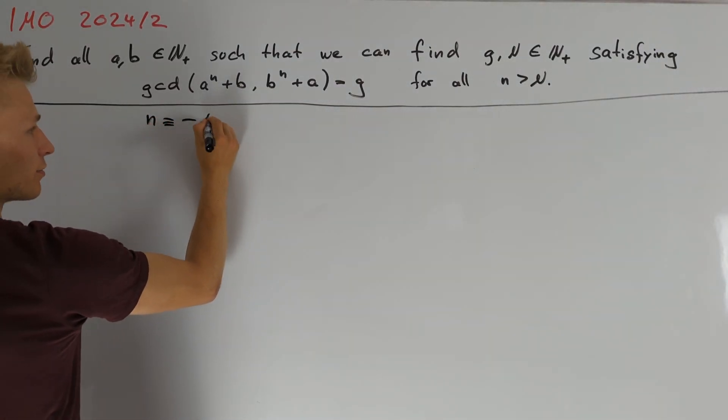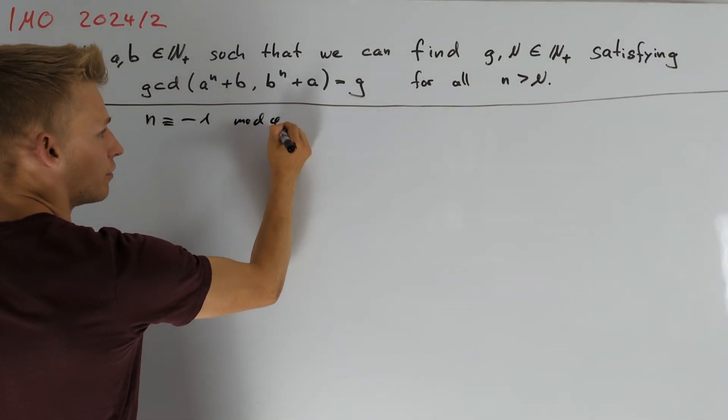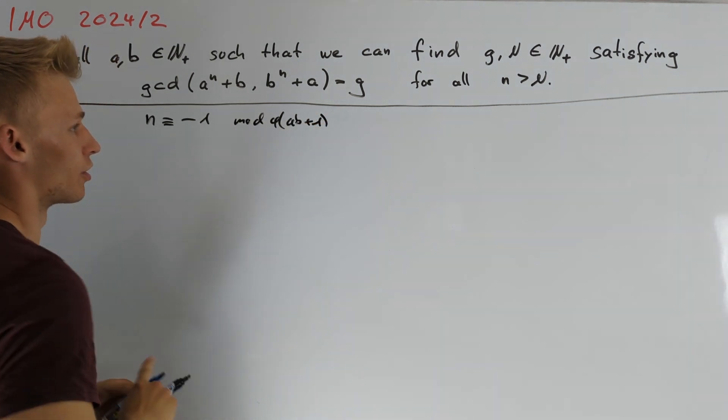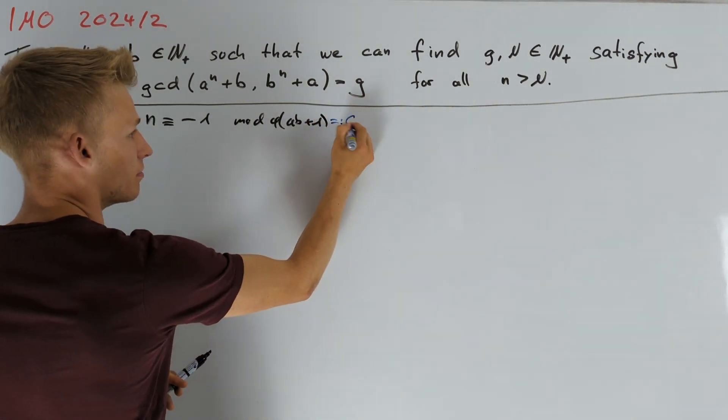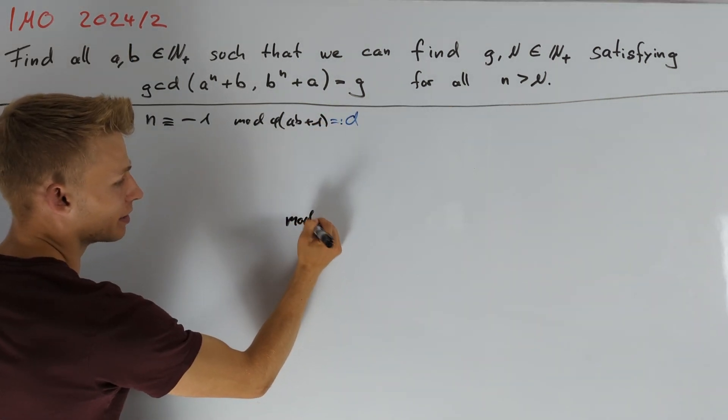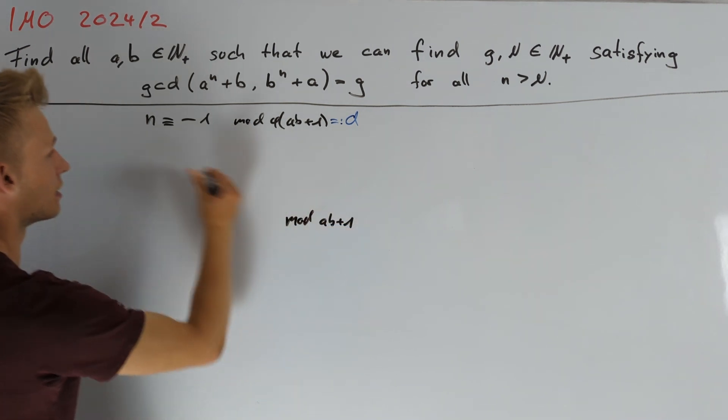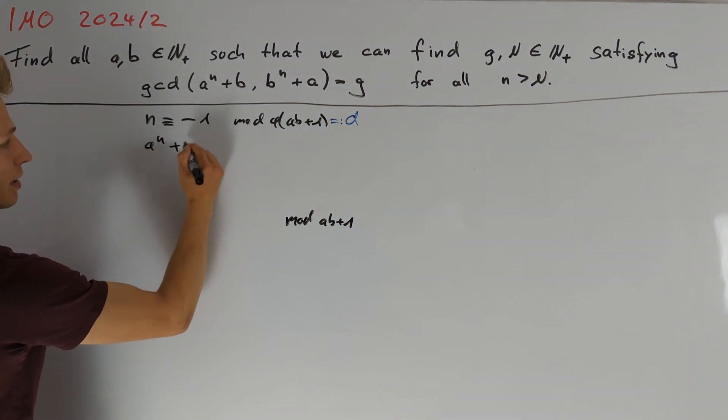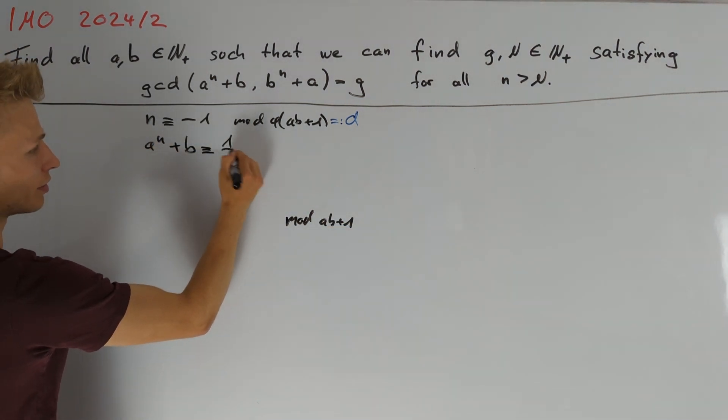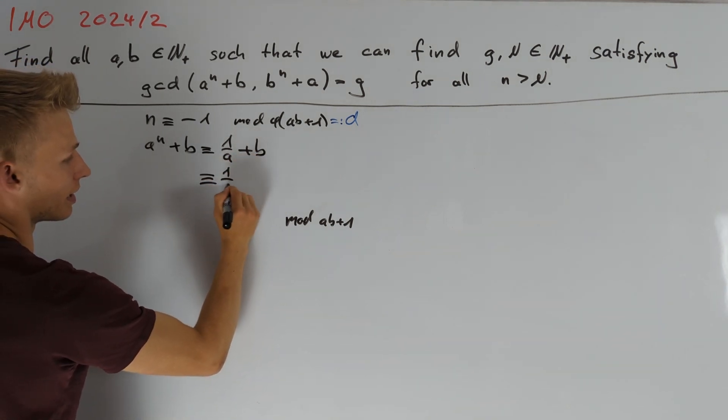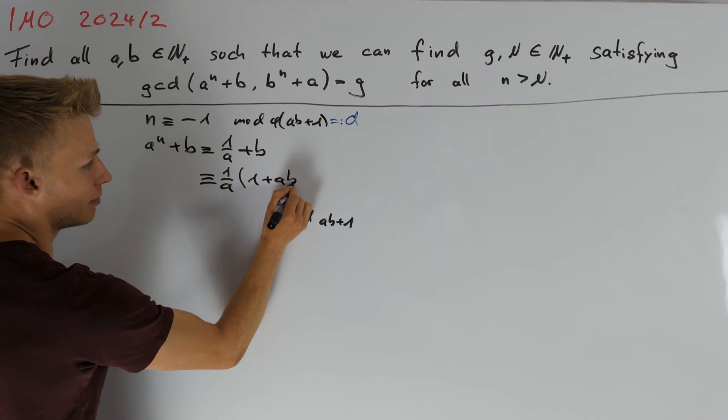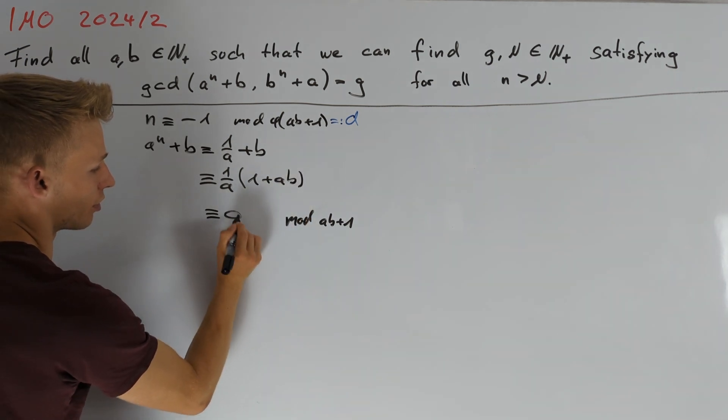To start the solution, let's take n congruent to minus 1 modulo phi of ab plus 1, which I am going to denote by d. Modulo ab plus 1, we get that a to the power of n plus b is congruent to 1 divided by a plus b, which is congruent to 1 divided by a times 1 plus ab, which is congruent to 0.